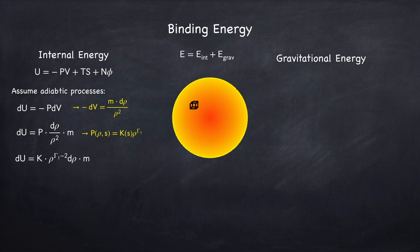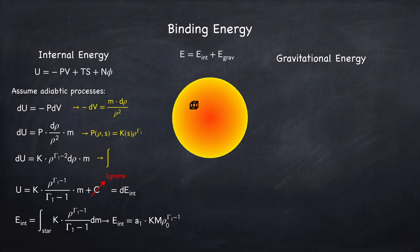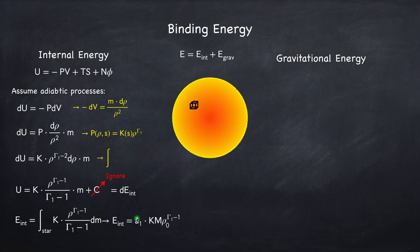We can now integrate this to get the expression for the internal energy. The constant C we don't actually care about — it turns out to just be the rest mass, so it's a constant offset we can subtract off from our definition of energy. Now we have to add up the energy for every little piece of mass in the star, which means integrating over the mass of the star. This gives us the final form for the total internal energy of the star, where rho-naught is the central density, m is the total mass of the star, and a1 is a numerical factor that results from integrating over some density profile. K, remember, is a function of entropy and may not be constant throughout the star, but just as with density, you can take K at the center of the star and the integral will absorb the variation into the numerical factor a1.